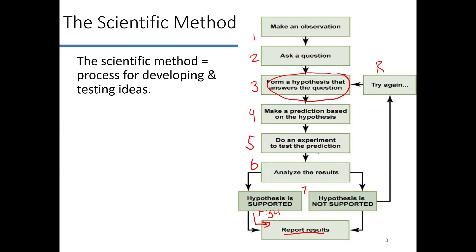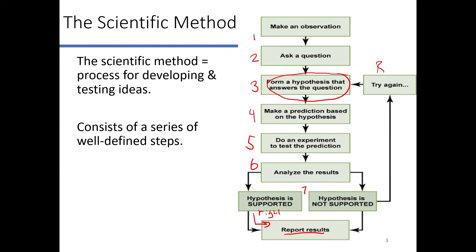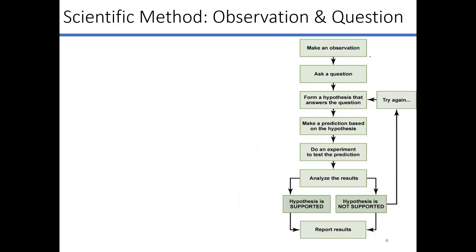The scientific method is just a process of developing ideas — a step-by-step process. You're presented with something you want to know more about, you ask a question, come up with a hypothesis, and so on. It consists of a series of well-defined steps. One important thing: if you look at other textbooks, the number of steps in the scientific method might be slightly different, but all the concepts are exactly the same — some might have more steps, some fewer, but all the concepts are going to be the same.